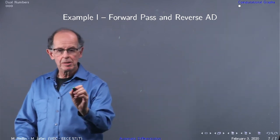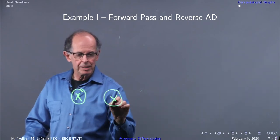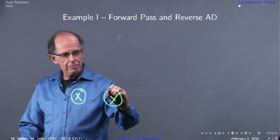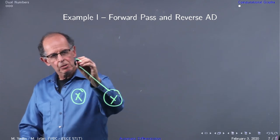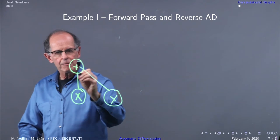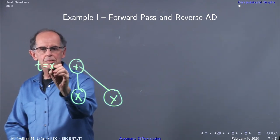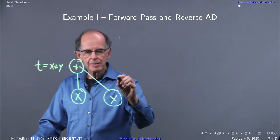To do computational graphs, we'll just use an example. I'm going to draw a computational graph starting with one number. We'll have an addition of x plus y, and we'll call this t, so t equals x plus y.